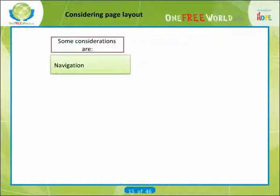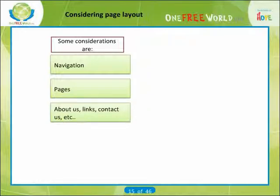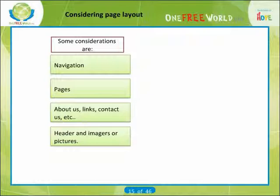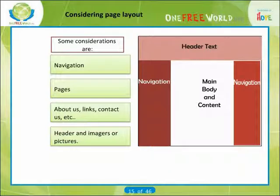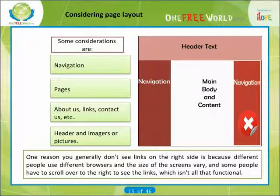Some considerations are navigation — this is how to get from one page to the next. Consider how many pages you need, what pages you want to have in the site including common pages like About Us, Links, Contact Us, etc. Consider the headers and any images or pictures you want to add. The most common layouts are having the navigation at the top or on the left hand side. One reason you generally don't see links on the right side is because different browsers and screen sizes vary and some people have to scroll to see the links, which isn't functional.